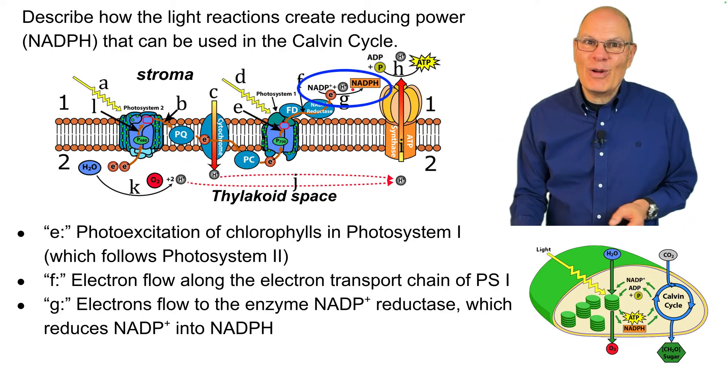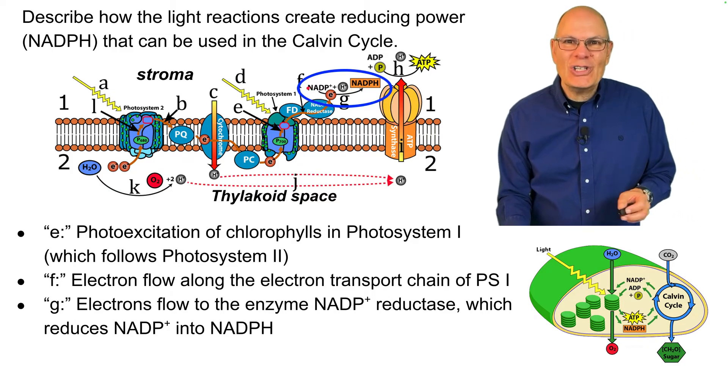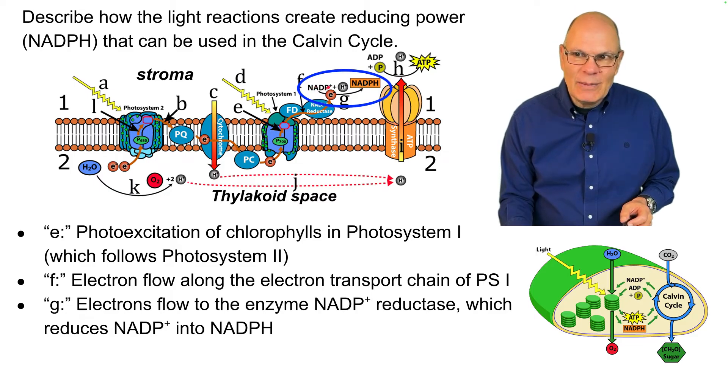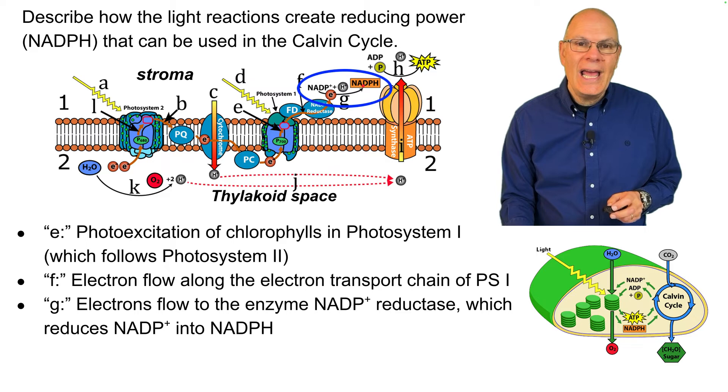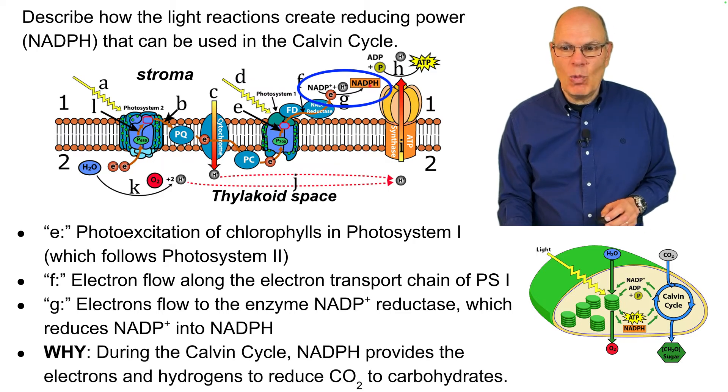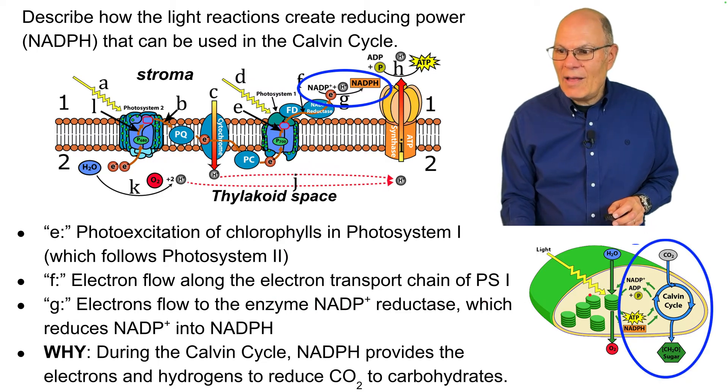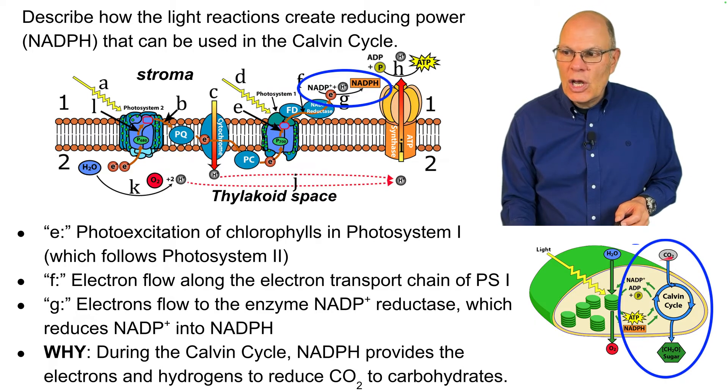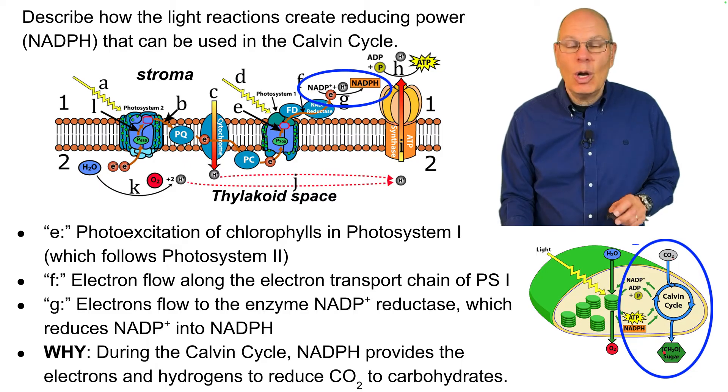Reduction, that's a thing from chemistry. Reduction is gain of electrons. So that NADP plus is going to gain electrons and hydrogen, making it into NADPH. And why? Because during the Calvin cycle, that NADPH provides the electrons and hydrogens that reduce carbon dioxide into carbohydrates.